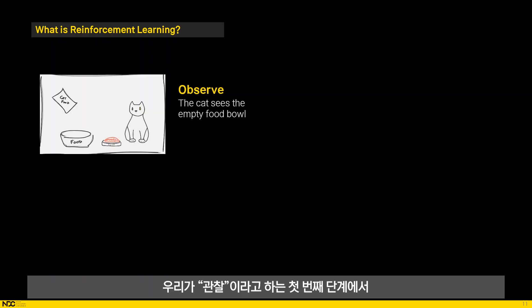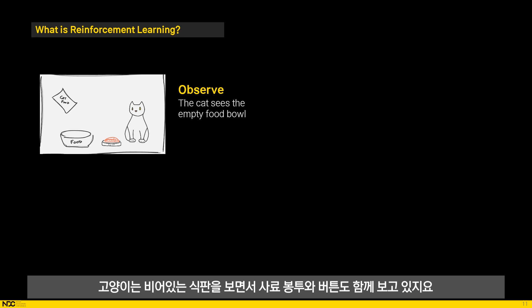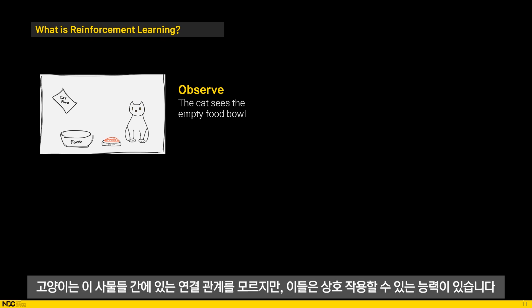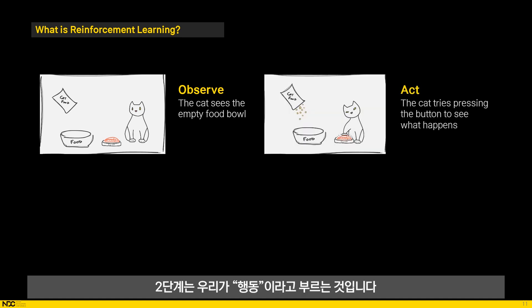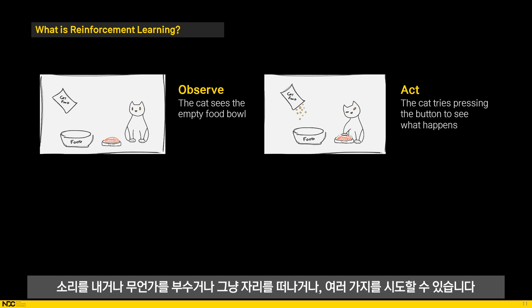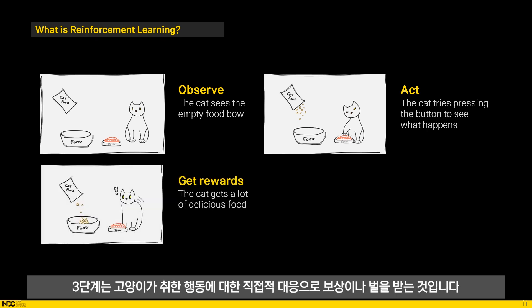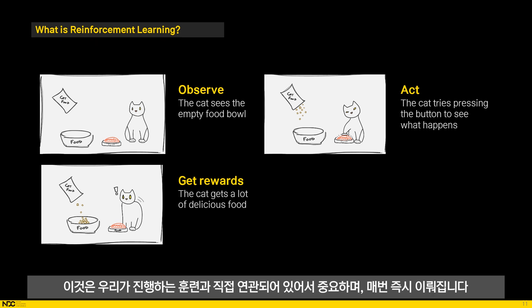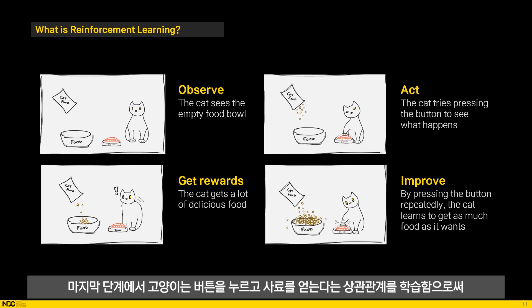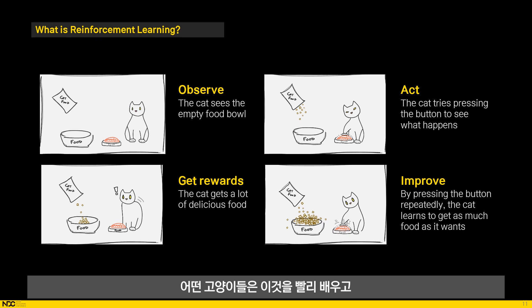In the first step, which we call observing, the cat sees an empty food tray as well as the bag of food and a button. It doesn't know the connection between these objects yet, but it has the ability to interact with all of them. The second step is acting — the cat has to decide to do something. It might try a lot of things: making sounds, breaking things, or just walking away. What is important is that it sometimes does the right thing by pressing the button, which releases the food. The third step is receiving rewards or punishment in direct response to an action the cat took. It is important that this is directly correlated with the training we're doing and happens immediately, every time. In the final step, the cat hopefully improves by learning the connection between pressing the button and getting the food. For some cats this will be very quick, and for others it will take a lot of food before it understands the task. Then we repeat this whole cycle until the behaviour is fully learned.